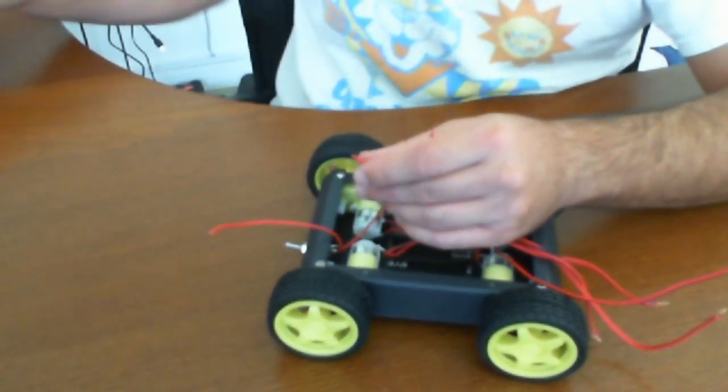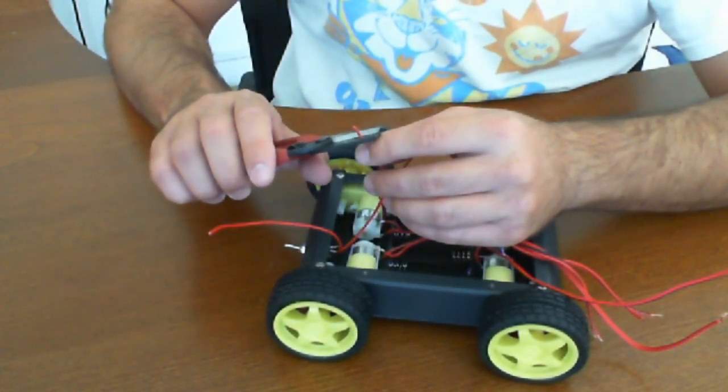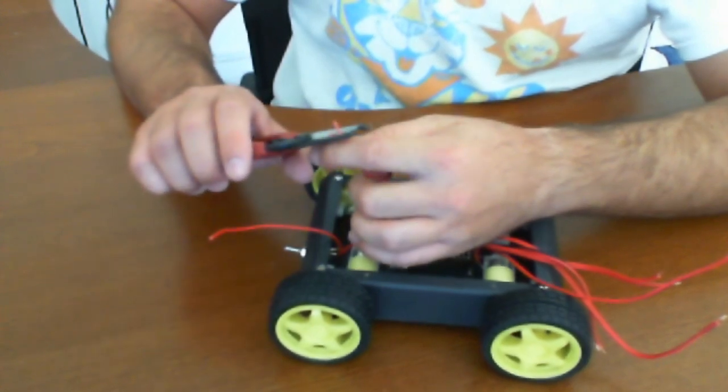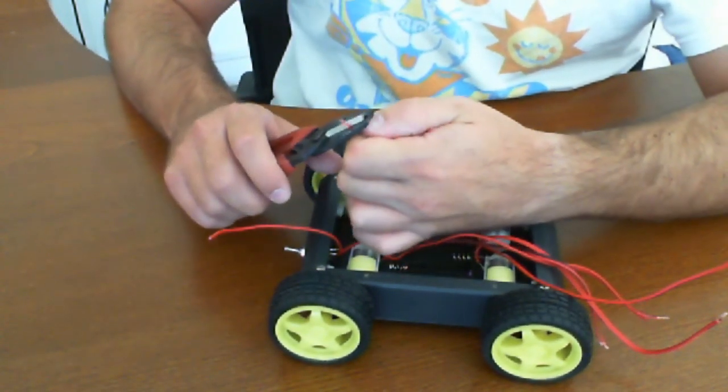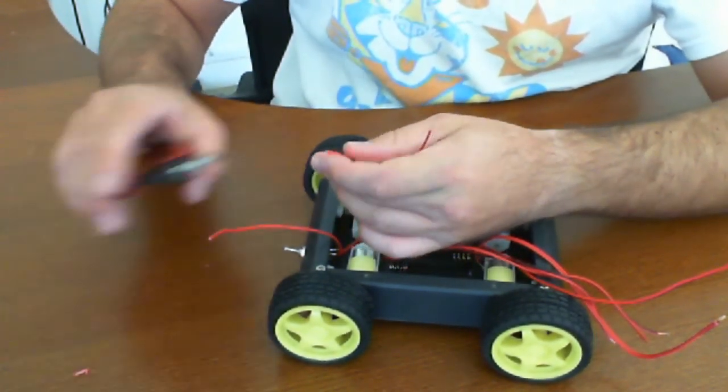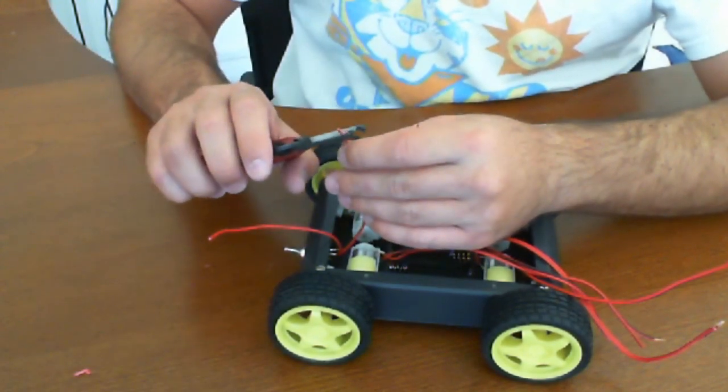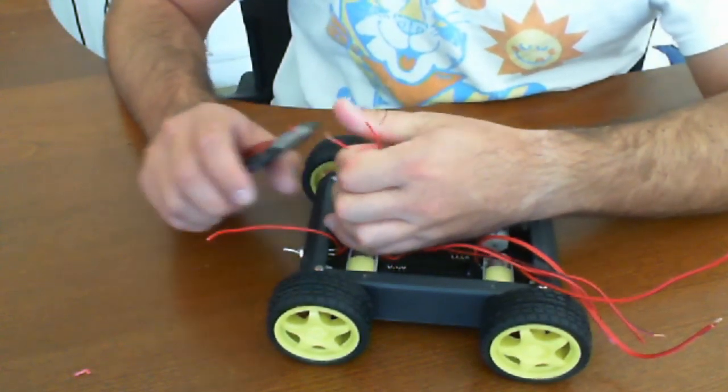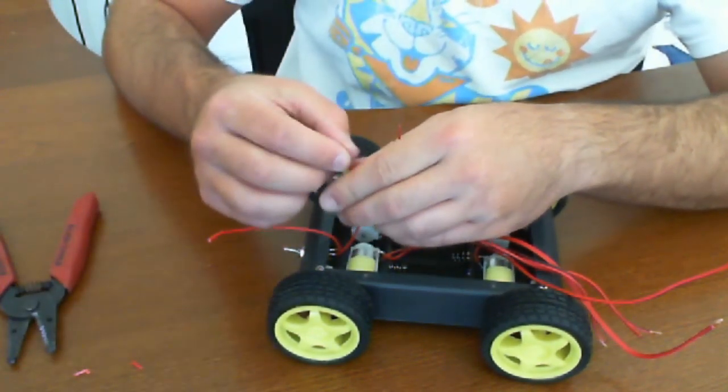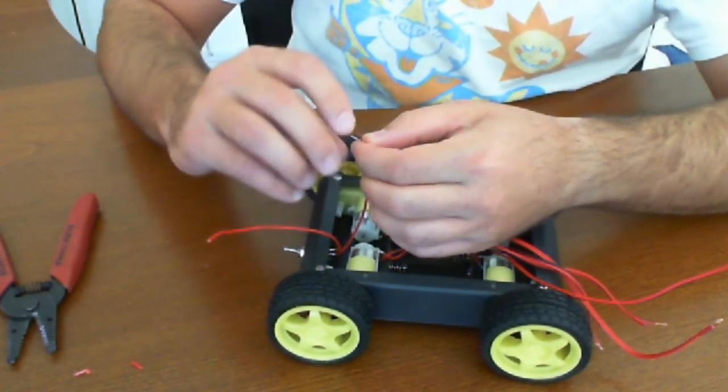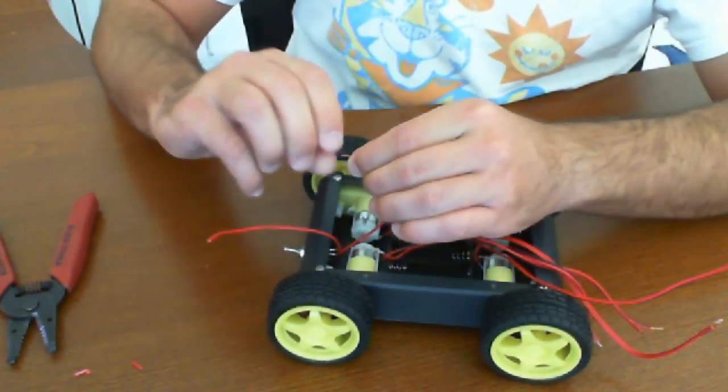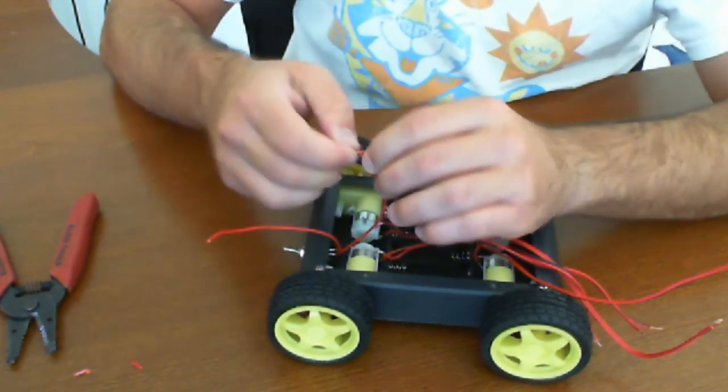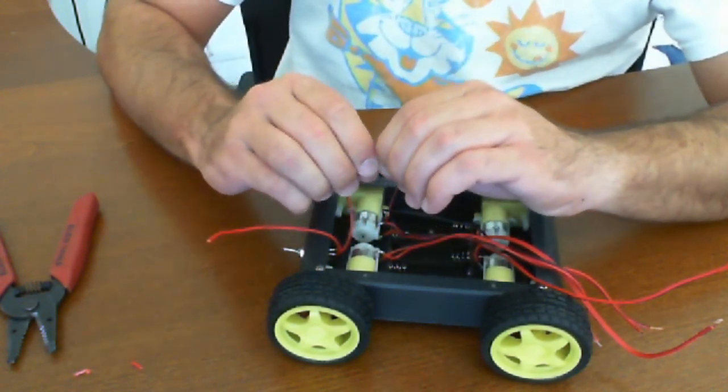Now in order to do that we're going to strip the wires. Oops, accidentally cut that too deep there. Now you can go ahead and solder it however you like. What we're going to do is we're just going to twist them together for now and we're going to tape it just to make things easier for us. We've done enough soldering already.